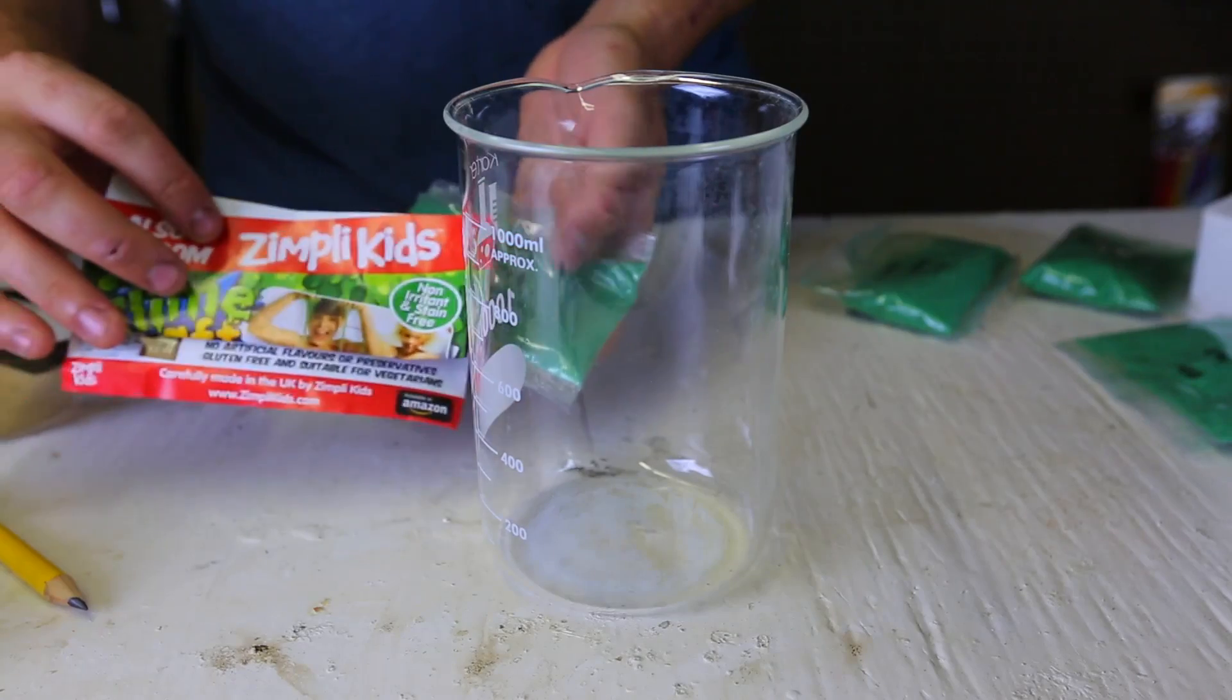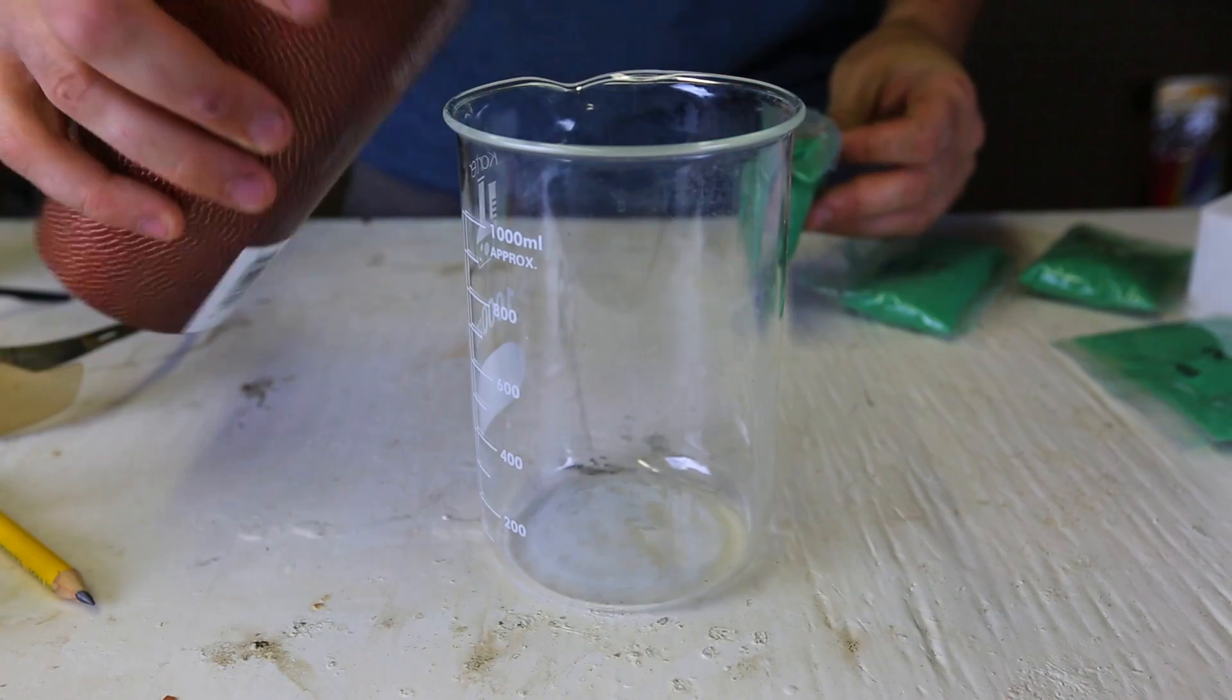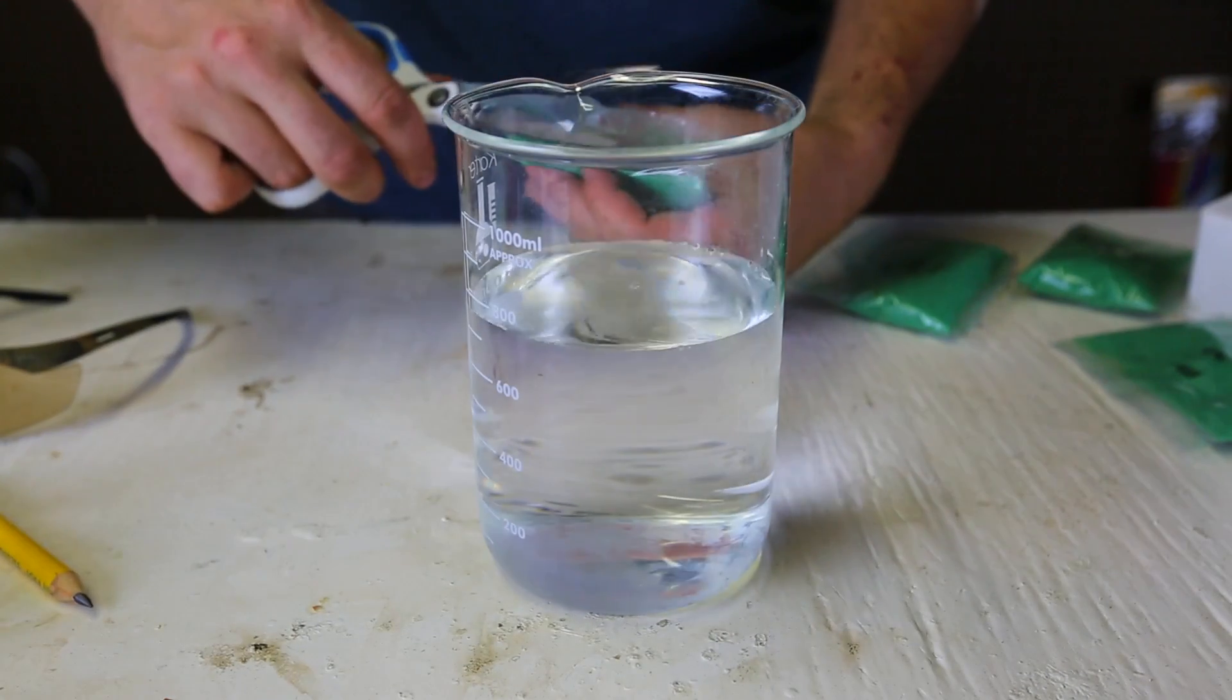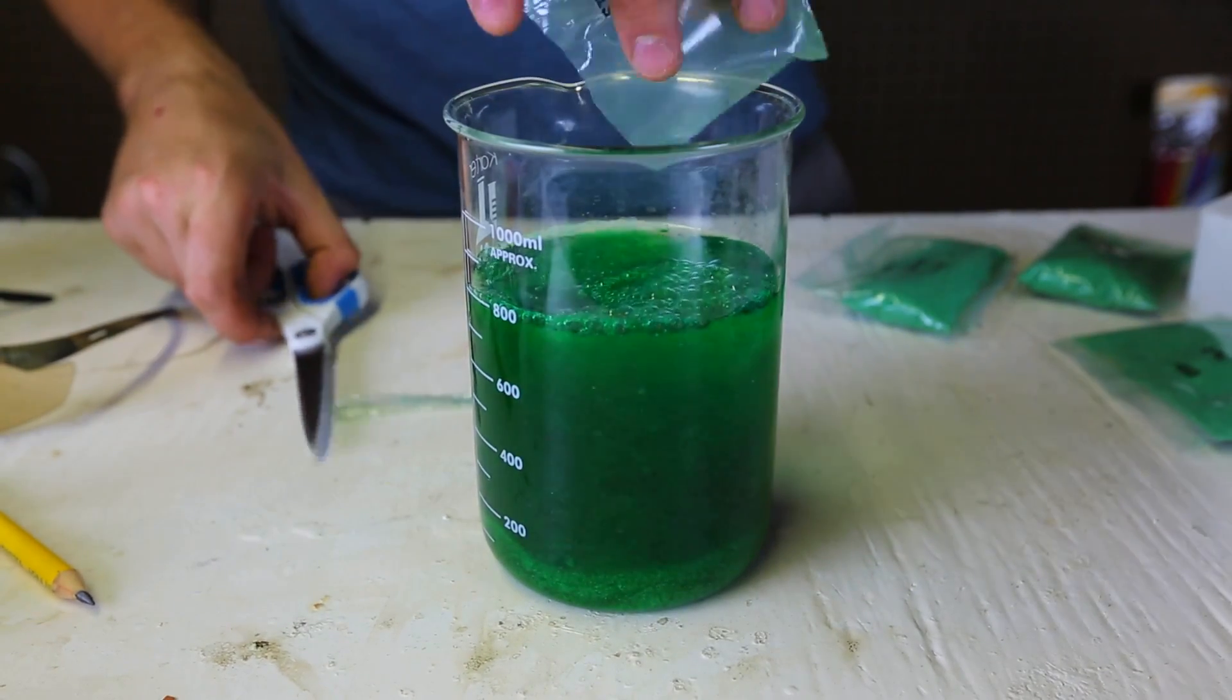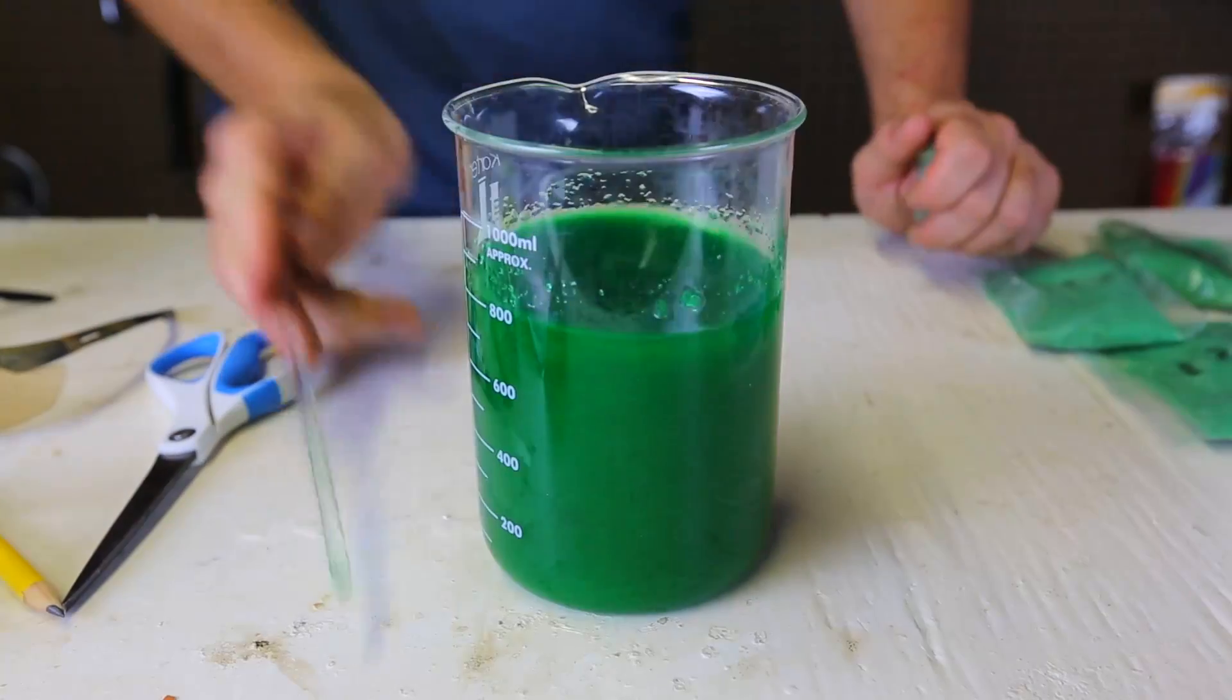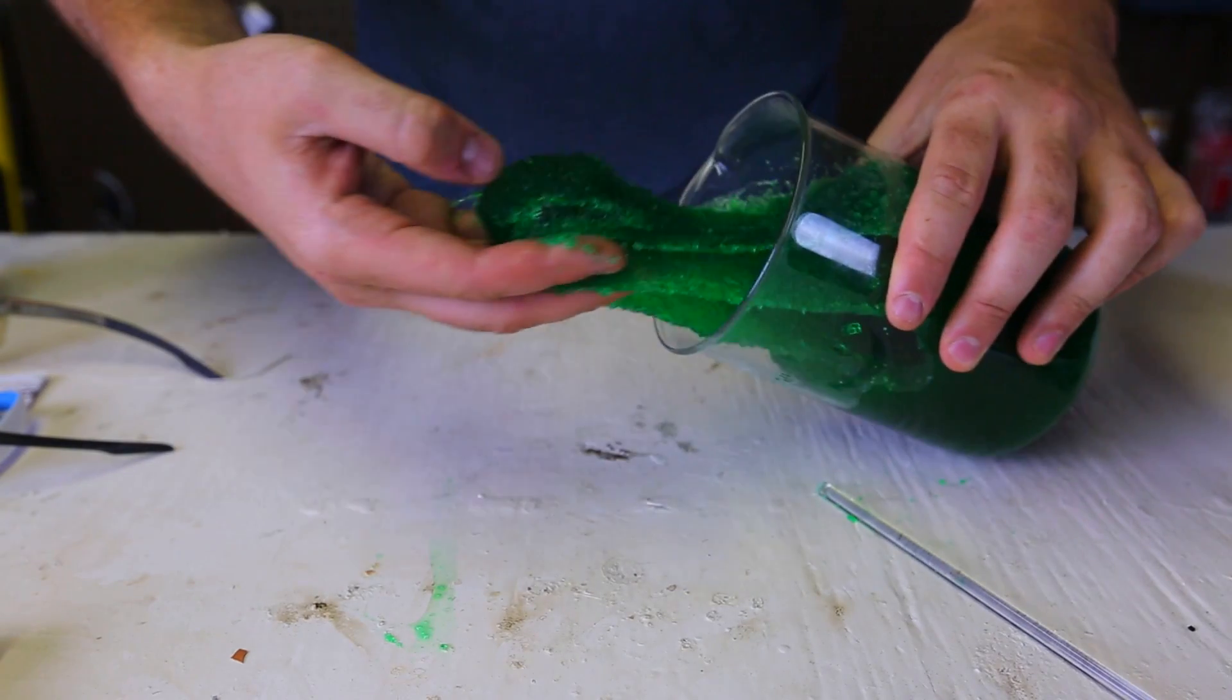This one is a Zipli Kids. It's supposed to be really easy to make slime. So, we're going to pour some water into the beaker. Next, we're going to get this powder and just pour it inside of there. I think just one will be enough. And then, we're going to mix it up. Now, I'm going to wait five minutes. Okay, that's it. Look at this. This is done.